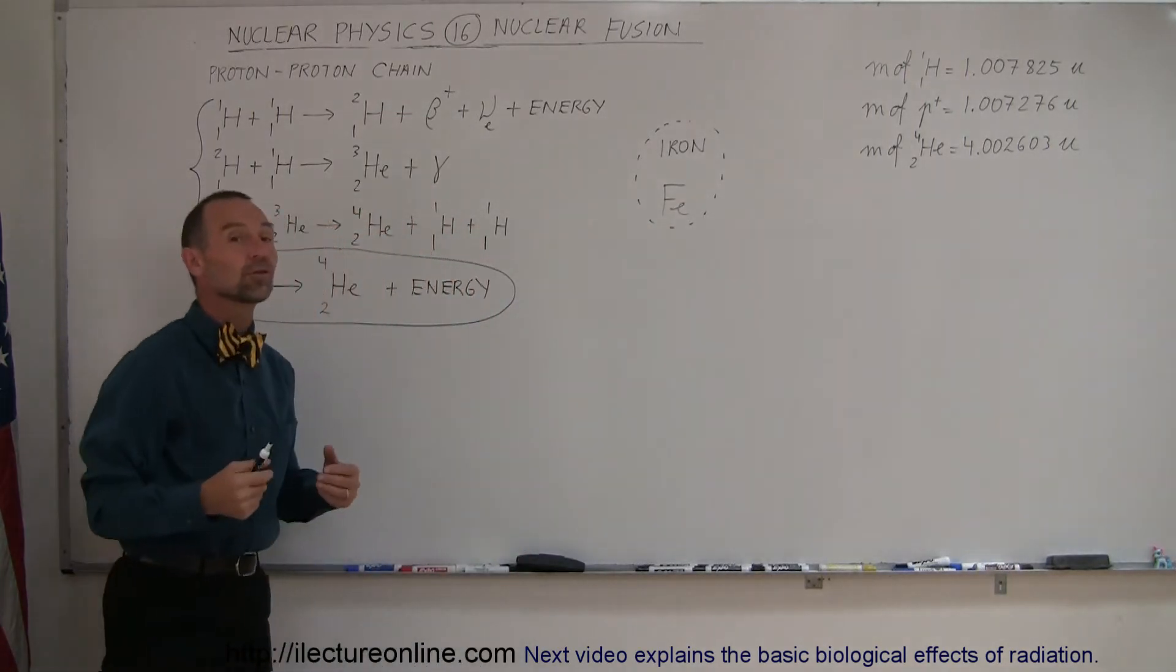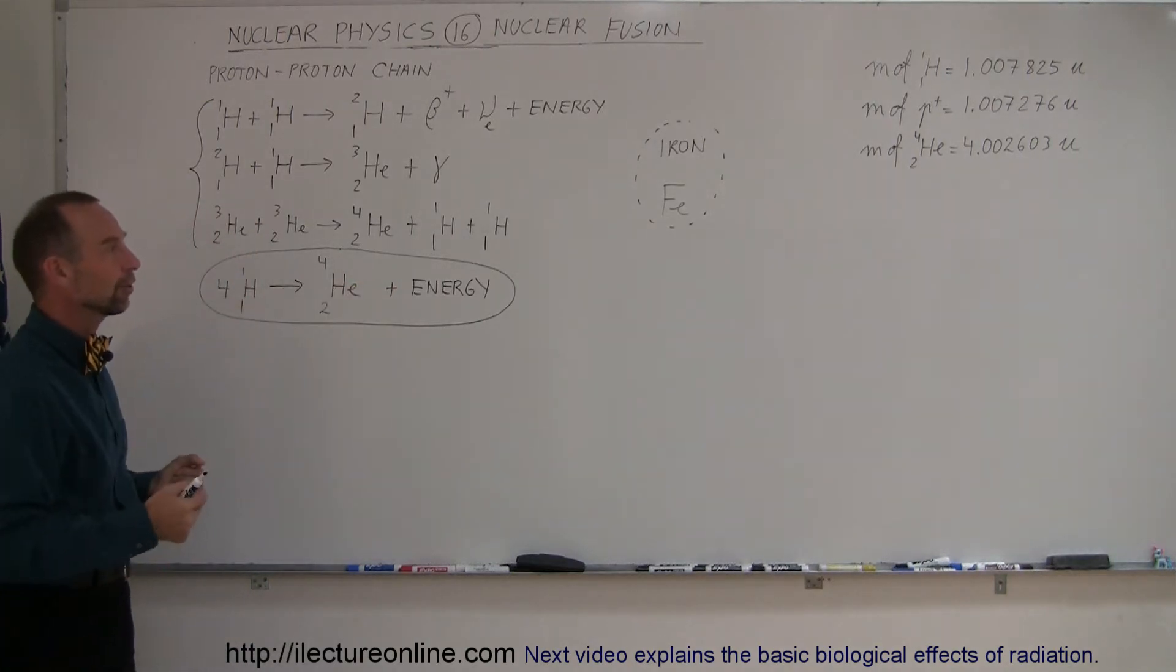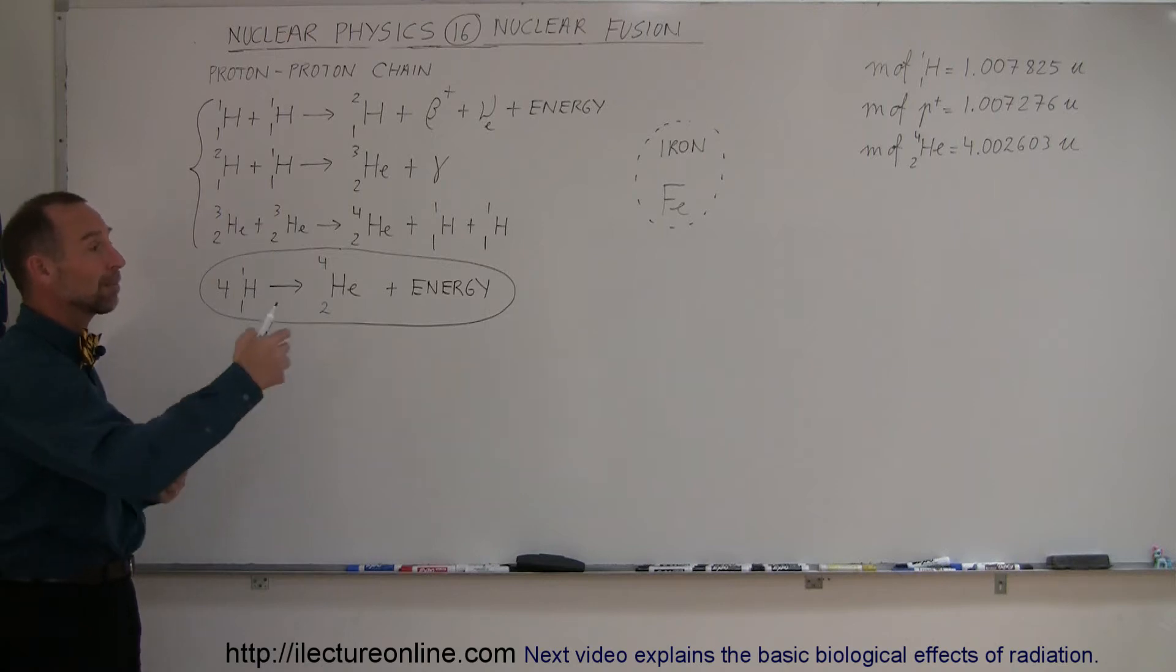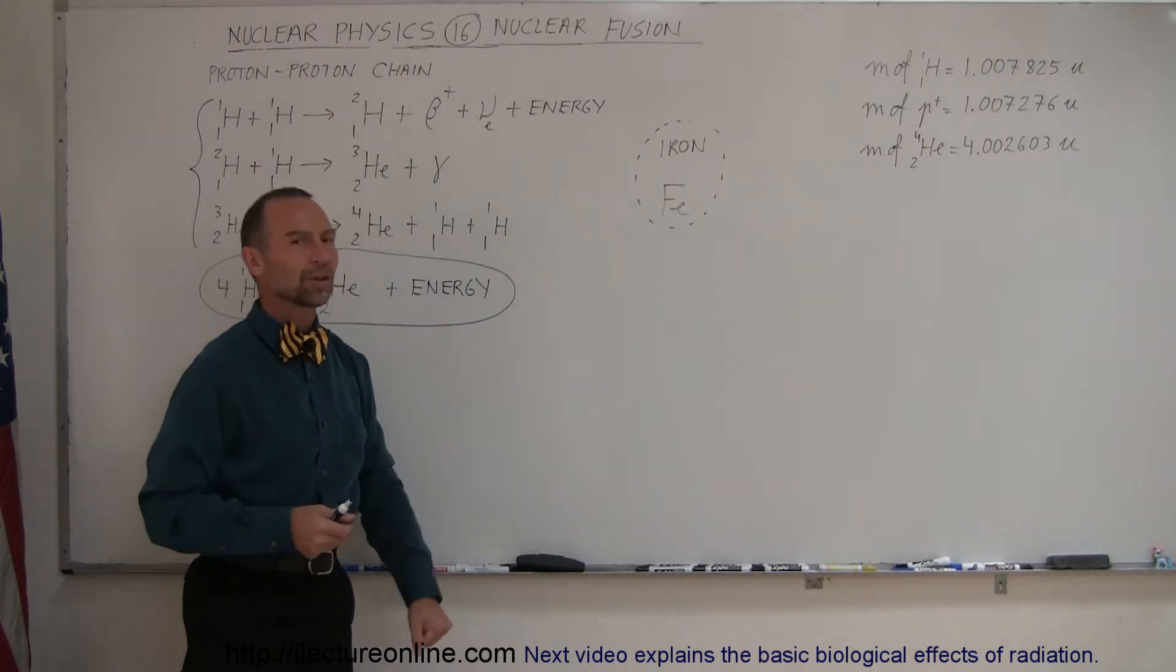The supernova explosion causes all the elements in the periodic table to be produced and then scattered throughout the universe. It's those atoms, those elements, that are then used to make planets like the Earth and used to make up the atoms of our bodies. If that didn't happen, we wouldn't exist.